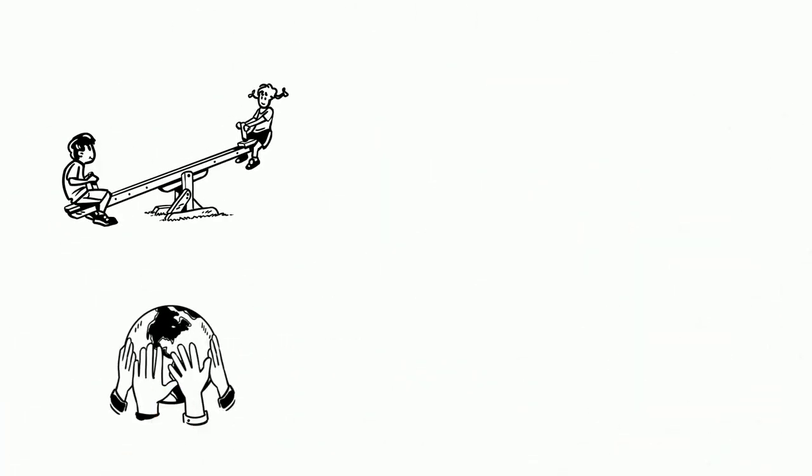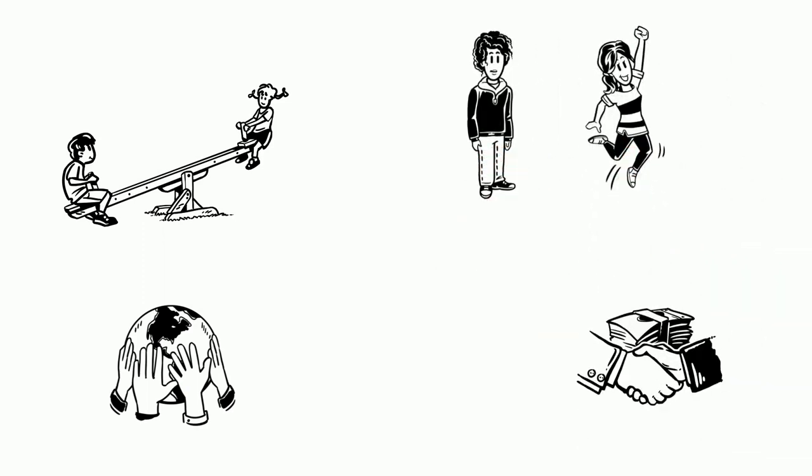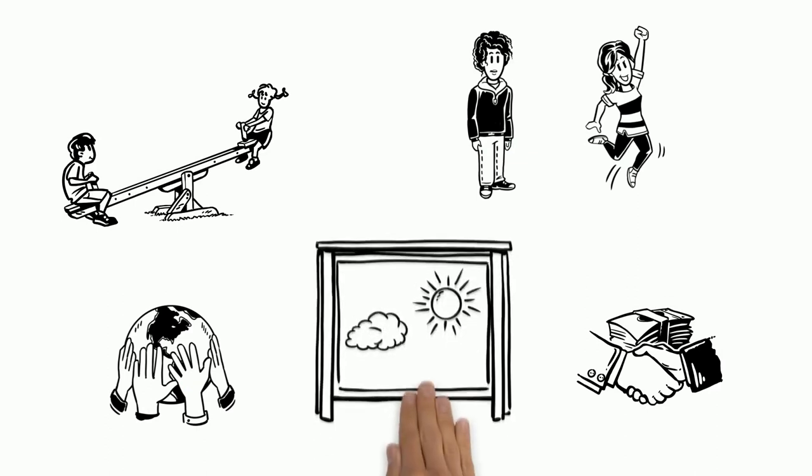The world was an open playground for them. Erik wanted to teach and travel the world. Rita dreamed about a business career and hoped to take over the family business one day.